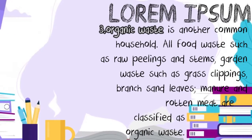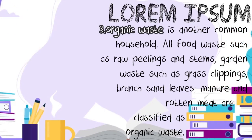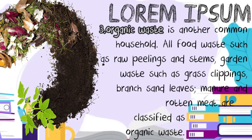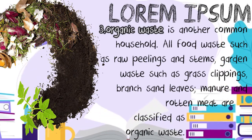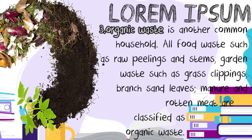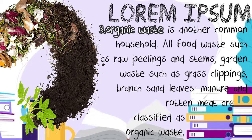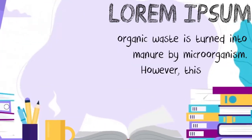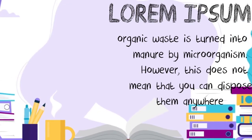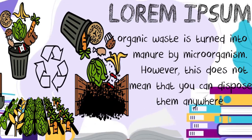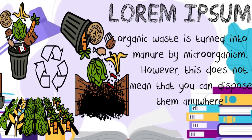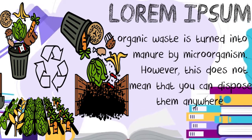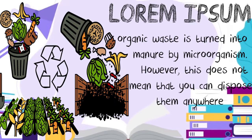Organic waste is another common household waste type. It includes all food waste such as raw peeling and stems, garden waste such as grass clippings, branches, sand, and leaves, and manure. Organic waste is turned into manure by microorganisms over time. However, this does not mean that you can dispose of them anywhere.